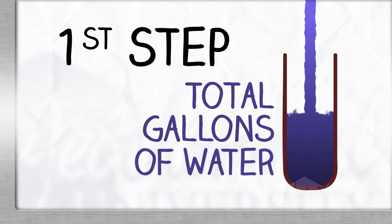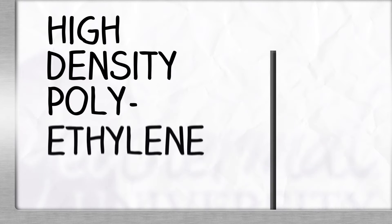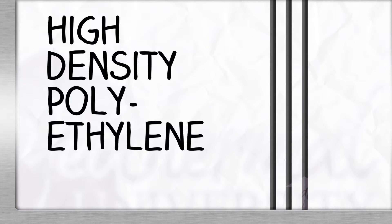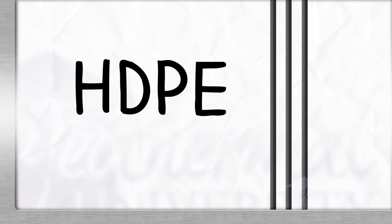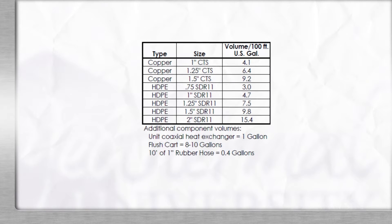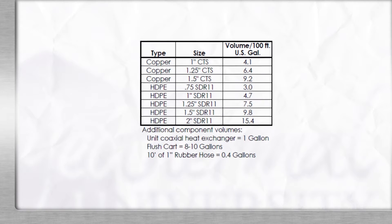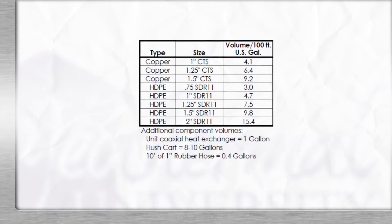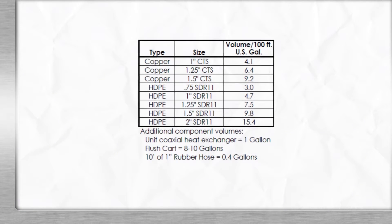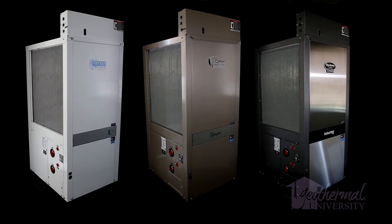Our first step is to calculate the total gallons of water for the entire system. In our example, we are using high density polyethylene pipe, or as it is abbreviated, HDPE. You'll need to have handy a copy of the pipe fluid volume chart in the Geothermal Unit Installation Operation Manual, or IOM. A copy of a typical IOM is attached to this video. In our example, we'll use a three-ton system.